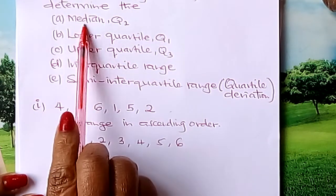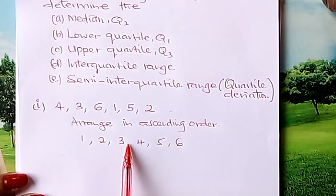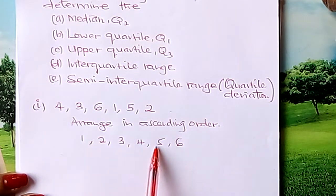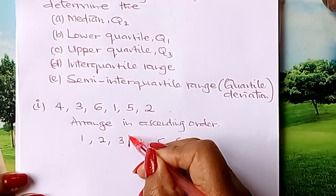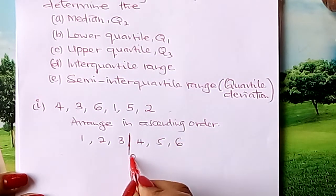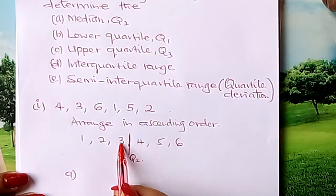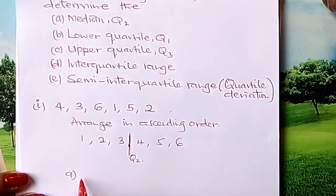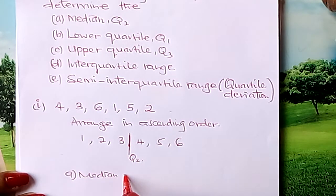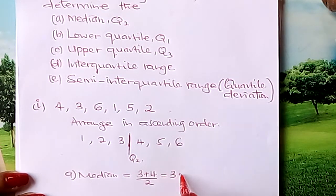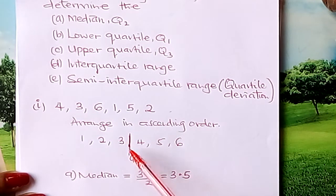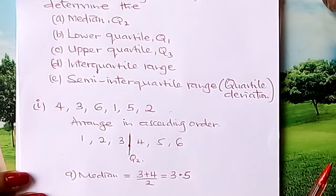We are meant to find the median — the figure that falls at the middle of this data. We have six numbers, so the median lies in between the third and the fourth. So the median, which is Q2, is found by adding those two: 3 and 4 divided by 2, which gives you 3.5. The median is the figure that lies at the middle of the data when arranged in ascending order.